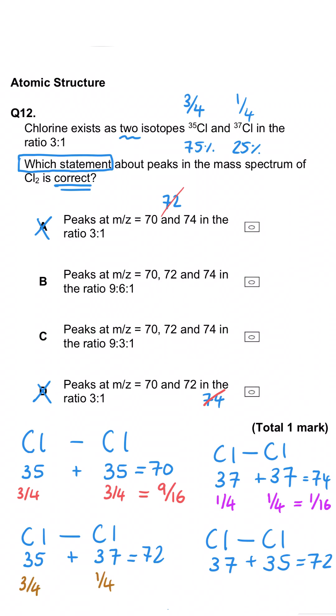For the next two, it's 3 out of 4 and 1 out of 4, so that's 3 out of 16. And similarly, 3 out of 16 for the one on the right. So that gives us three peaks in a 9 to 1 to 6 ratio. So B.